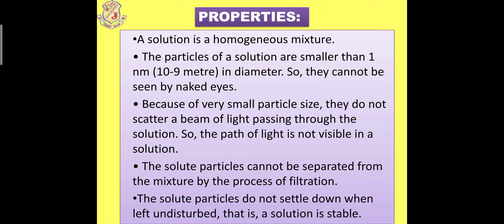There are certain properties of a solution. First, a solution is a homogeneous mixture. The particles of a solution are smaller than 1 nanometer (10⁻⁹ meter) in diameter, so they cannot be seen by the naked eye. As they are very small in size, they do not scatter a beam of light passing through them, so the path of light is not visible in a solution. The solid particles cannot be separated from the mixture by a physical process like filtration. The solid particles do not settle down when left undisturbed — that is, a solution is stable — because the particles mix up and form a homogeneous mixture.